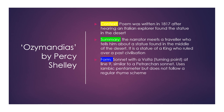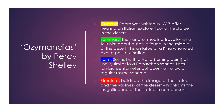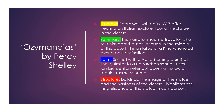The form is a sonnet with a volta or turning point at line 9, similar to a Petrarchan sonnet. It uses iambic pentameter but does not follow a regular rhyme scheme. The structure builds up the image of the statue and the vastness of the desert, and highlights the insignificance of the statue in comparison.